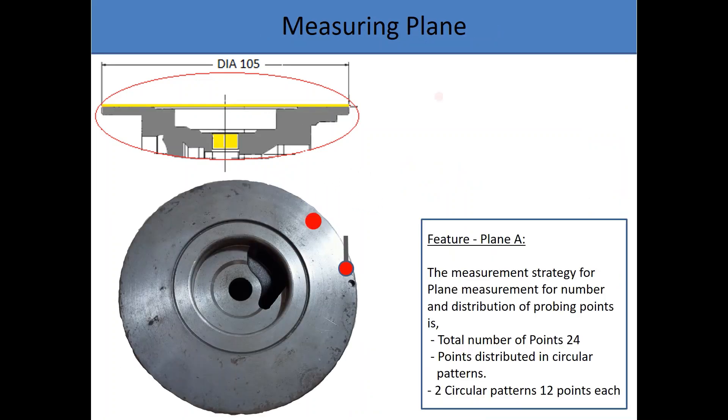The measurement strategy for plane measurement. Total number of points are 24, distributed in circular patterns. Two circular patterns, 12 points each. After finishing of the measuring points, a mathematical algorithm of software is used to fit the plane geometry. The algorithm used in this case is least square method, also called gauss method or simply best fit method. Two parallel planes encompassing all the points is called form error. In this case it is a flatness error.